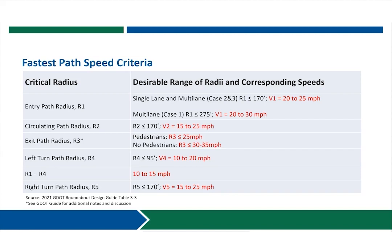This slide presents GDOT's fastest path speed criteria — the maximum speeds and radii desired for the different path components. For the entering portion R1, we typically want speeds below 25 miles per hour for single-lane roundabouts and some multi-lane cases. For most multi-lane case one designs, up to 30 miles per hour is allowed, but keeping it lower is preferred. Circulatory path radii R2 typically operate in the range of 15 to 25 miles per hour. At exits where pedestrians are present, a desired maximum speed of 25 miles per hour applies. Where no pedestrians are present, GDOT allows speeds up to 30 to 35 miles per hour, though keeping speeds slow is desirable where possible.